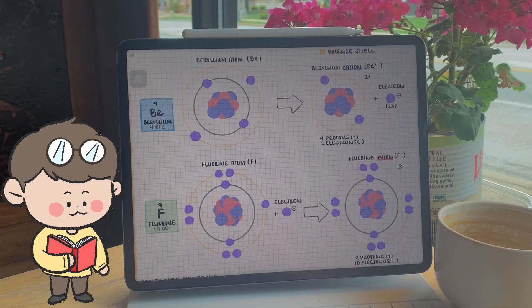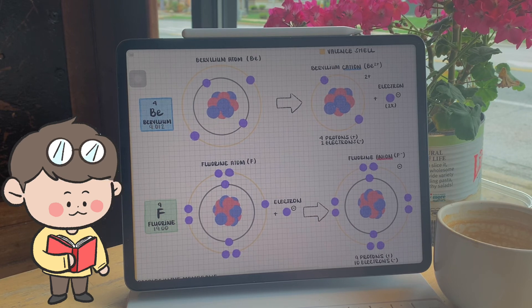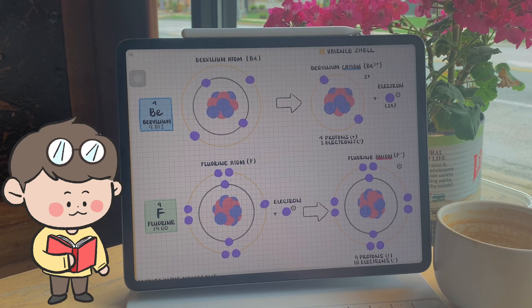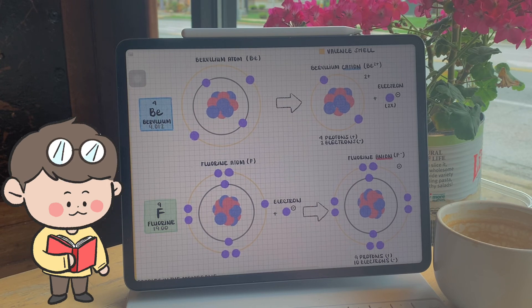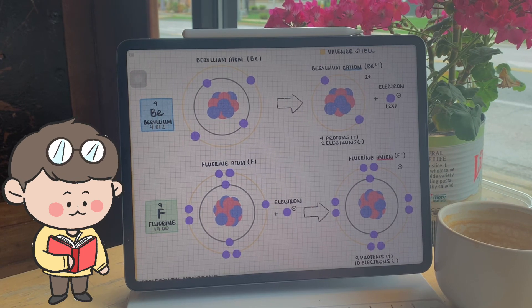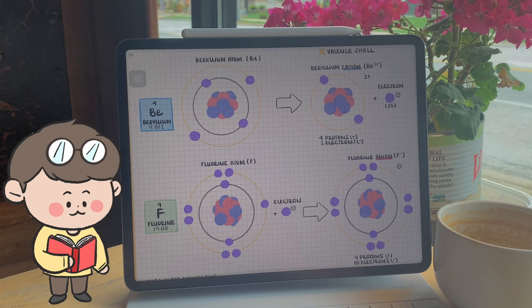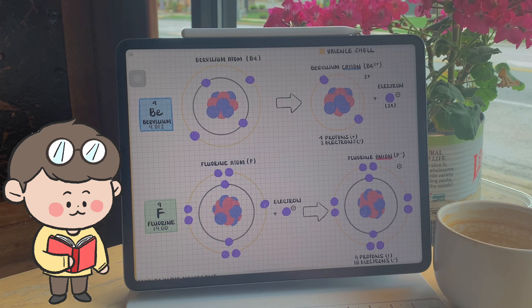Later on, when we start to learn about ionization energy, the energy required to pull an electron off an atom, and electron affinity, the change in energy within an atom when an electron gets added, we'll be able to characterize which atoms favor gaining an electron and forming anions or losing an electron and forming cations.